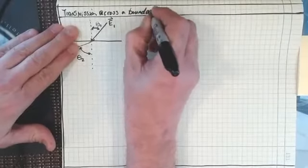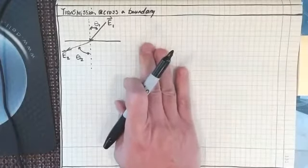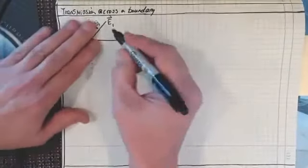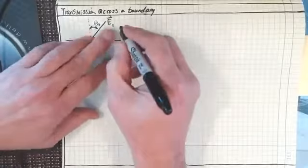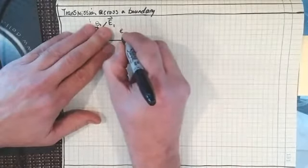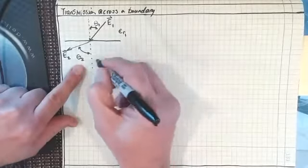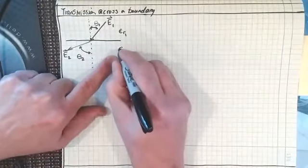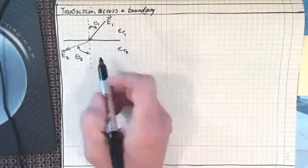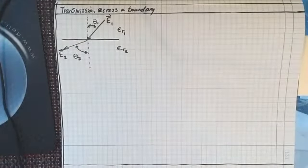Now, when I say a boundary, I mean a boundary between two different materials with different relative permittivities. So let's say that this has a relative permittivity of one — I'll call that epsilon sub R1 — and this material over here has a permittivity of epsilon R2. Everything over here is a two, everything over there is a one.